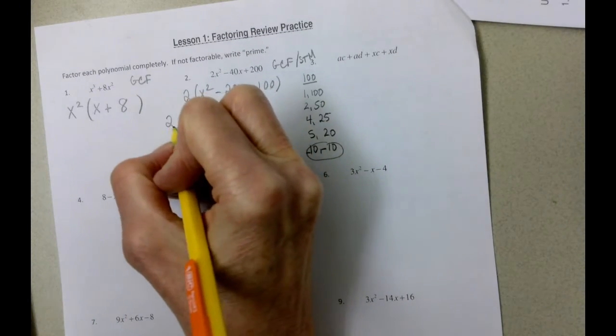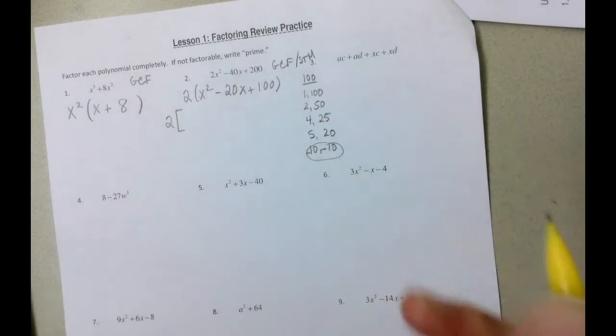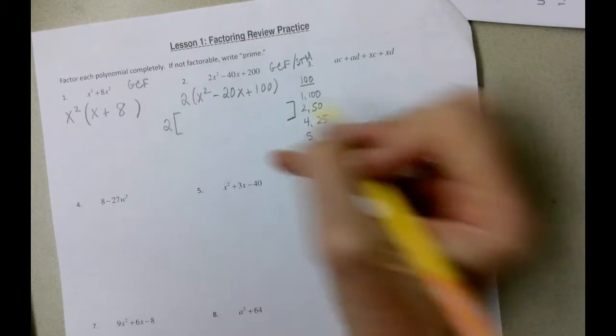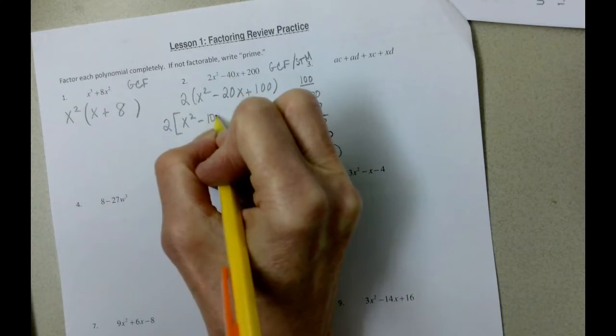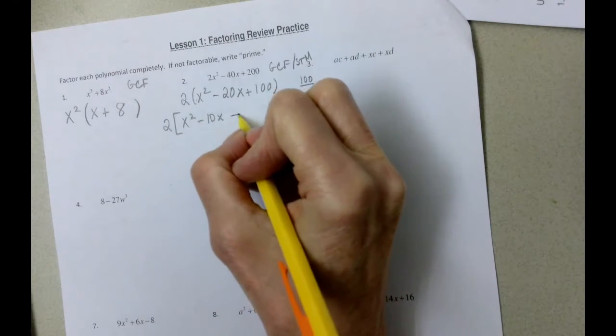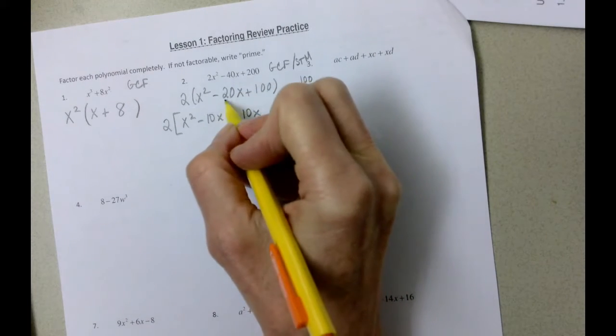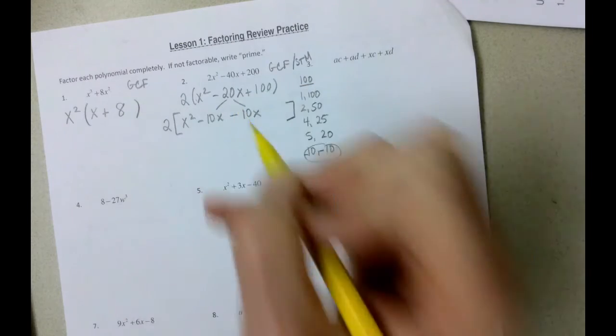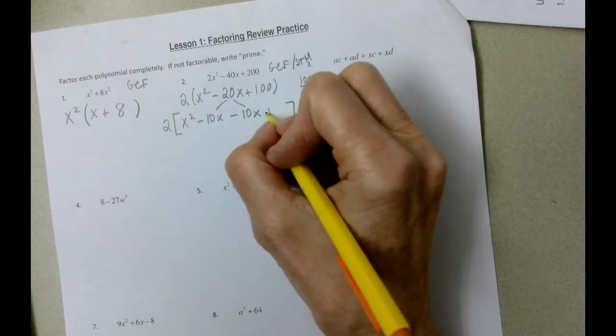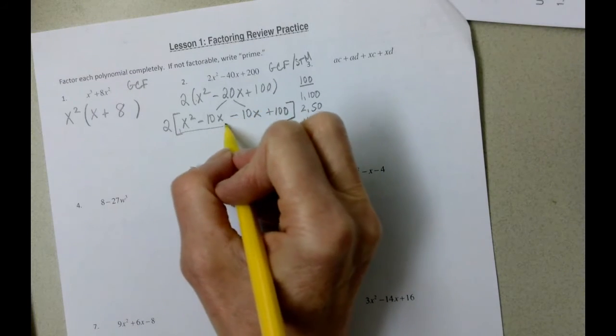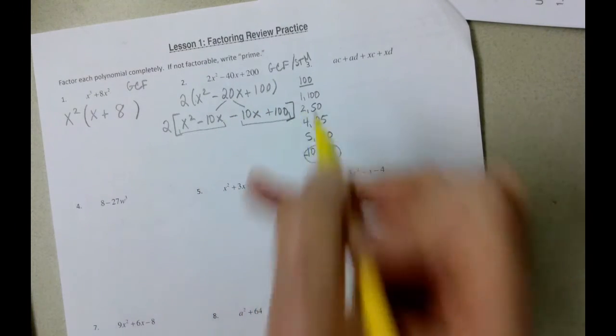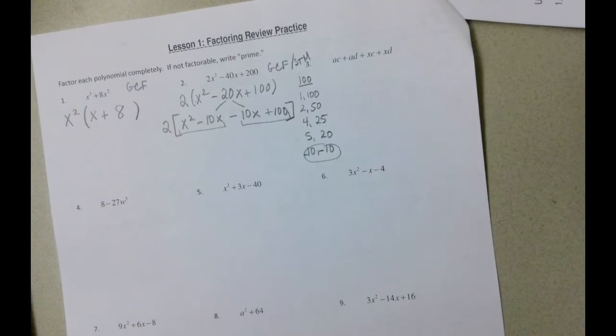So we have this two out there, which I'm going to leave. I'm going to put in brackets, use parentheses if you prefer, and then it's going to be x squared minus ten x minus ten x. Again, remember, we split the middle. There's the middle. We split it.